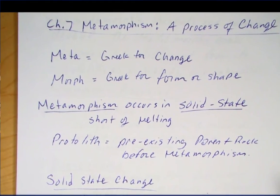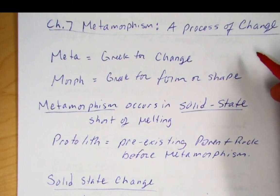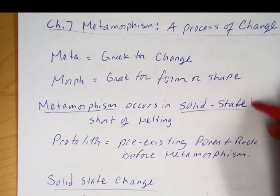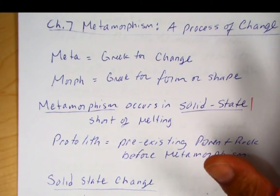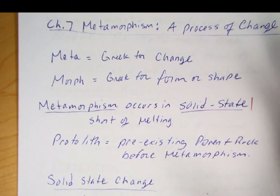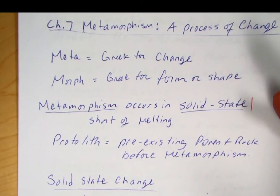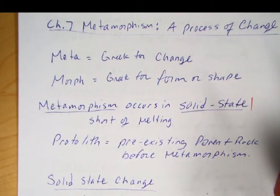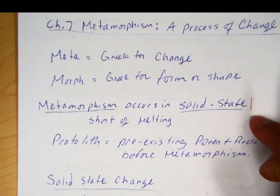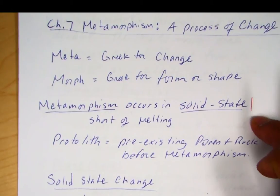Metamorphism occurs short of melting. Once you melt the rock, you've left the realm of metamorphism and you're in igneous rocks. Remember, all igneous rocks share a common characteristic — they cool from a magma. So if you melt a rock, you're going to produce an igneous rock.